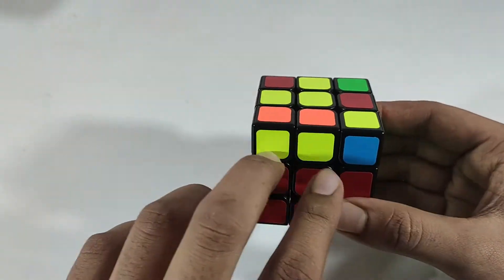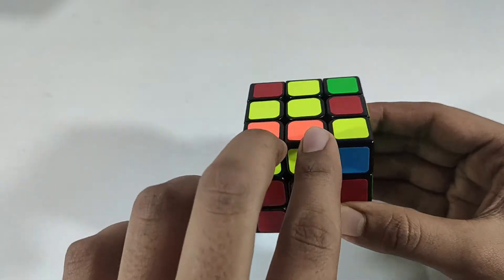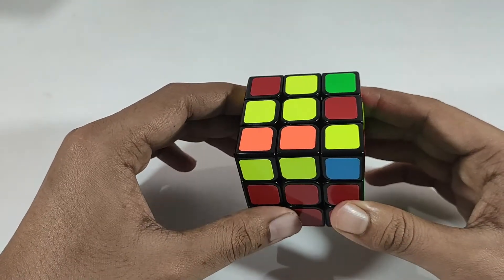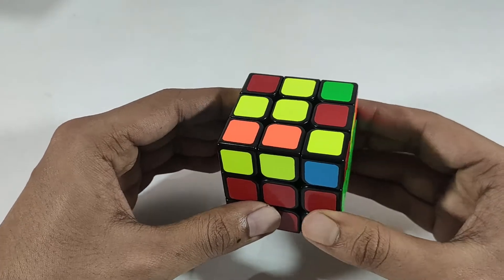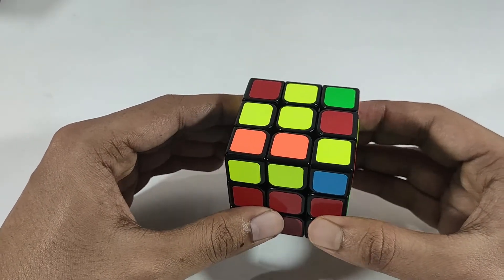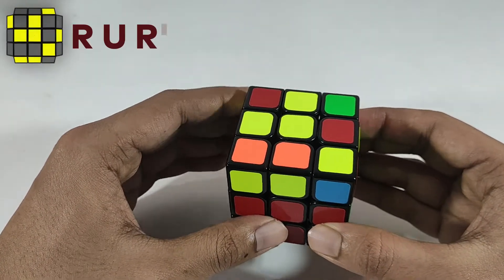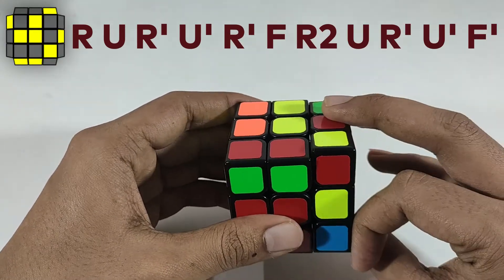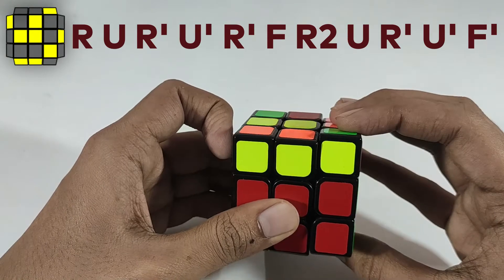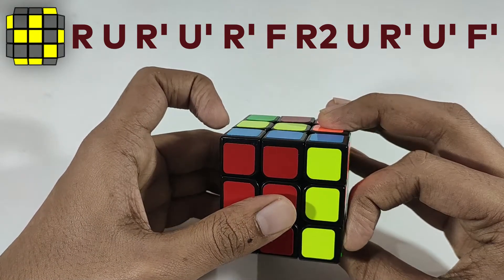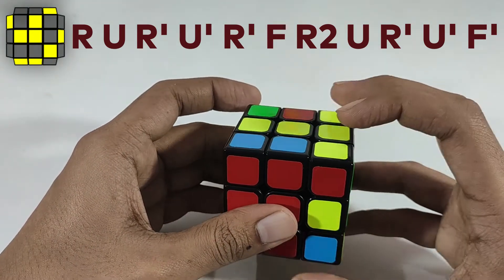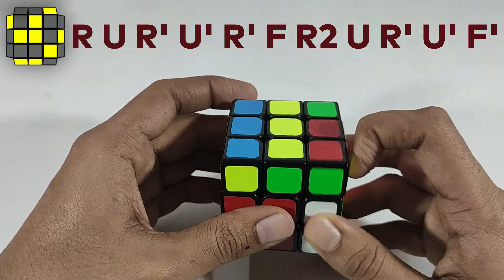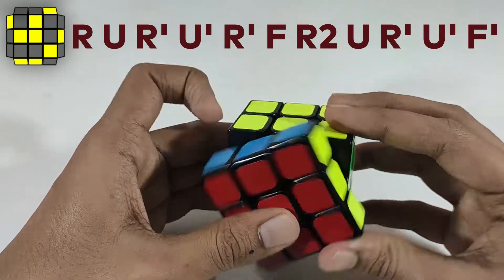So this is the first case where you have an EC pair right down below the fish. Okay, so the formula for this goes like this: R U R' U' R' F R R U R' U' F'